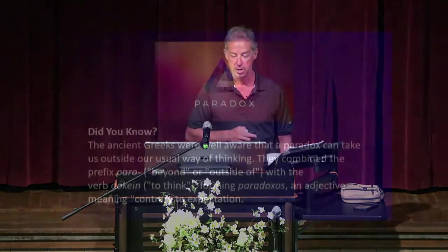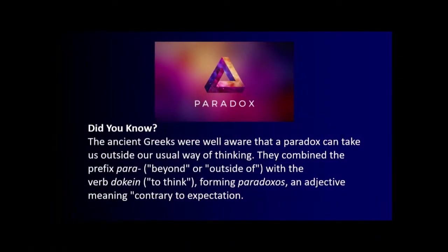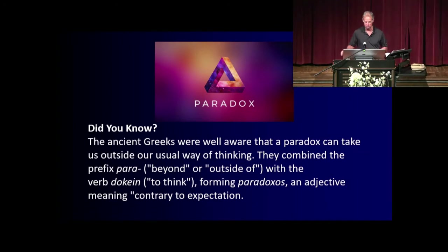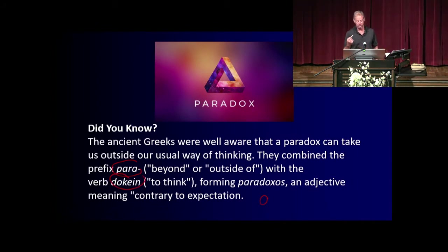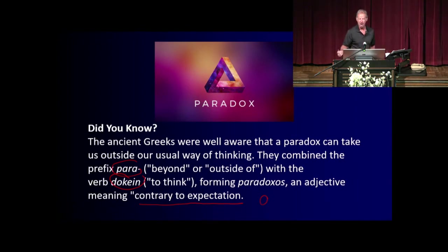Here's a little extra nugget from the Merriam-Webster website: the ancient Greeks were well aware that a paradox can take us outside our usual way of thinking. They combined the prefix 'para,' which means beyond or outside of, with a verb meaning 'to think,' and got the word 'paradoxus' — an adjective meaning contrary to expectation. So you look at something and the real truth is, well, that's contrary to what I was expecting. It really gets you to think a little bit further, a little bit deeper.